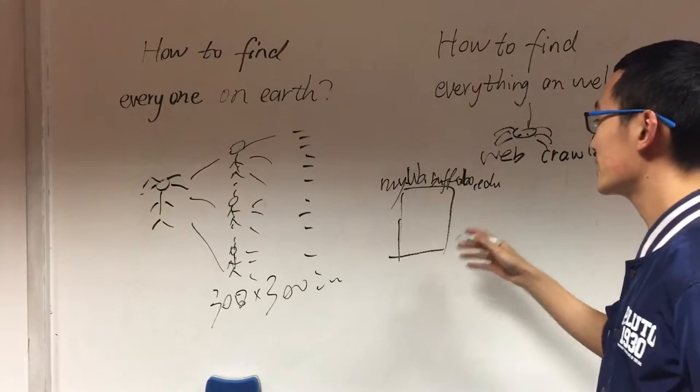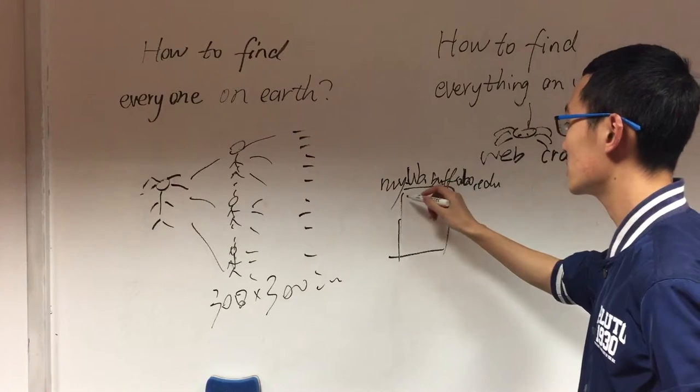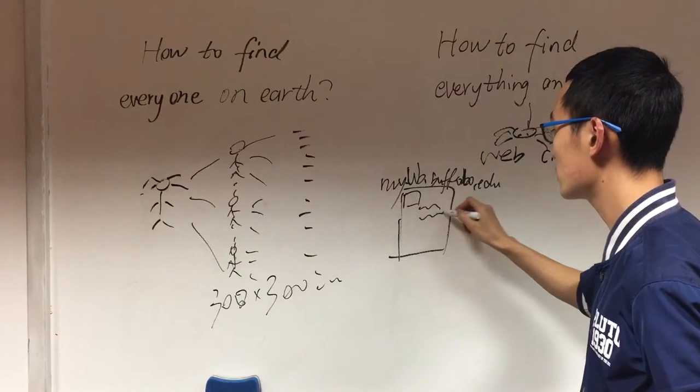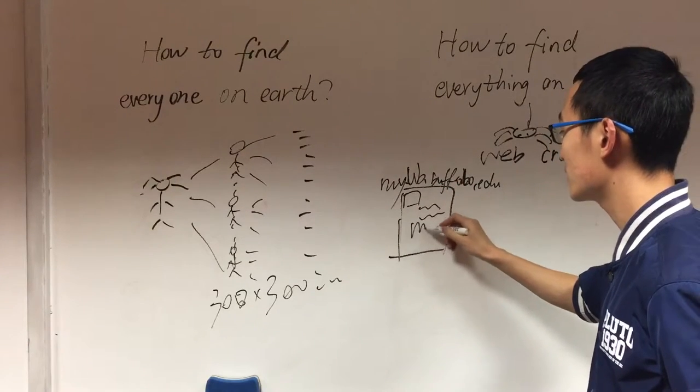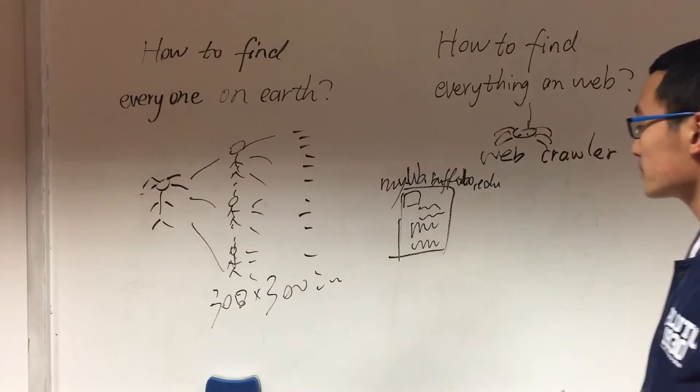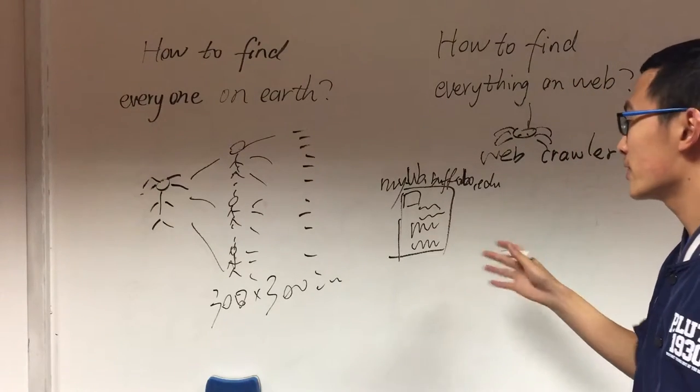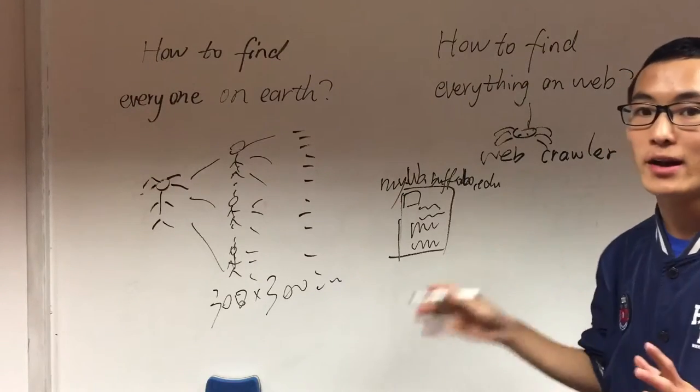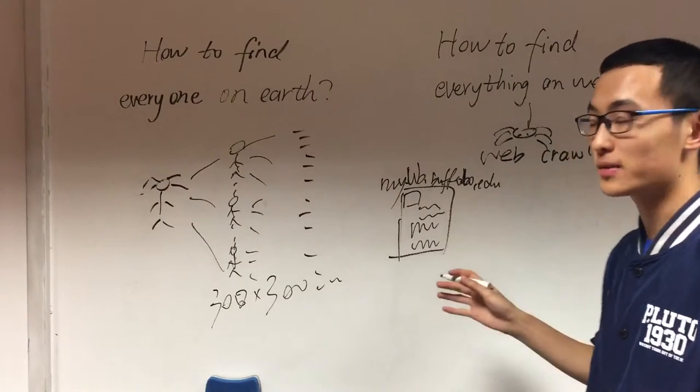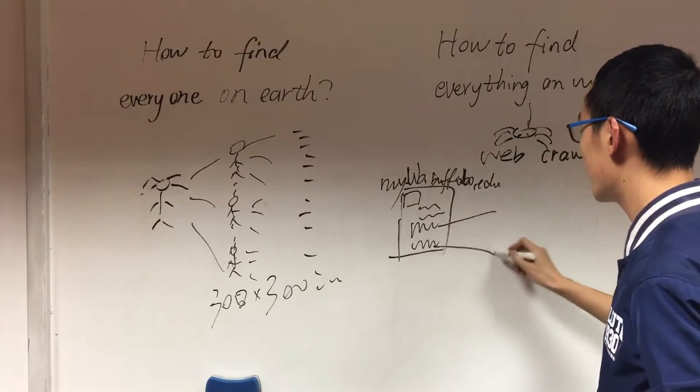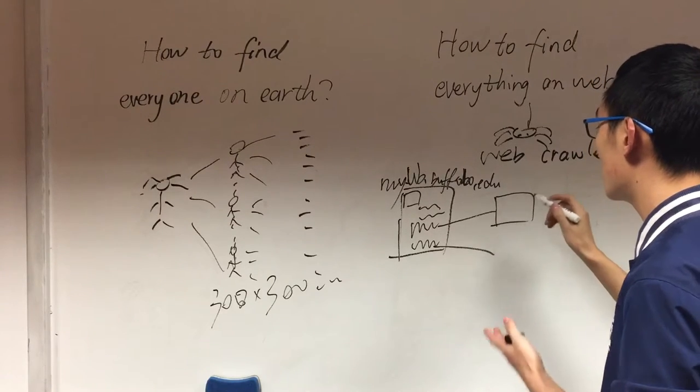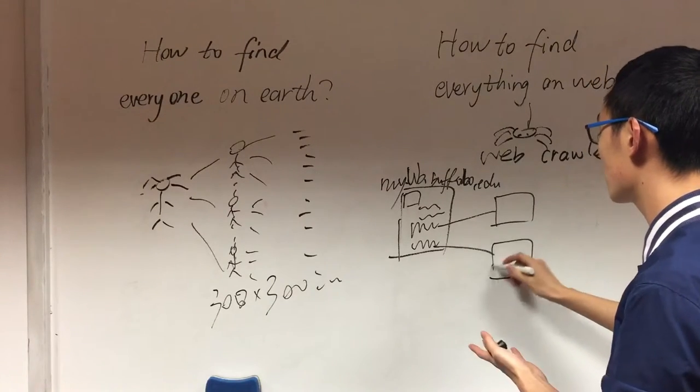And in this website, there are main contents such as some images, some words, and some links to other websites. So the Web Crawler will view this website and find out all the links to other websites, other pages, and it will follow the links to those pages.